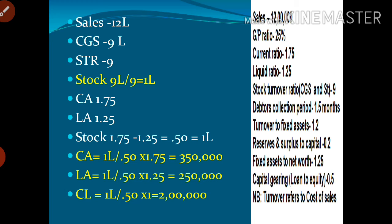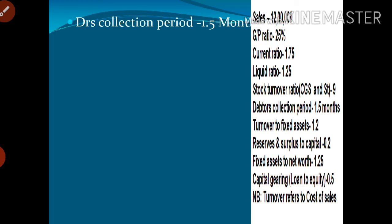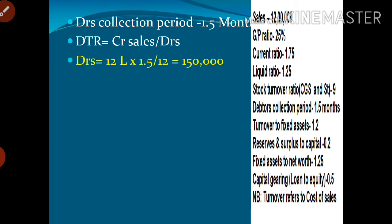Next, we look at other items related to current assets. There is a debtors collection period of 1.5 months. Debtors turnover ratio equals net credit annual sales divided by average debtors. Since months are given instead of a ratio, we simply multiply: debtors equals net credit sales of 12 lakhs multiplied by 1.5 months divided by 12, which equals 1 lakh 50 thousand.